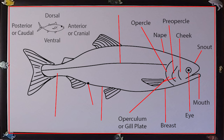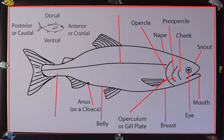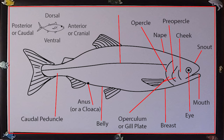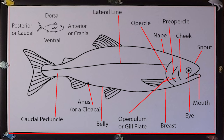The breast is usually referring to the ventral region anterior to the pelvic fins. The belly is usually referring to the ventral region posterior to the pelvic fins. Either the anus or the cloaca — which is when the urogenital passage and the anal passage are as one — are anterior to the anal fin. The caudal peduncle is part of the body starting at the end of the anal and dorsal fins. The lateral line, if visible to the naked eye, is seen running laterally along the body; sometimes it is fragmented, sometimes visible on the head.